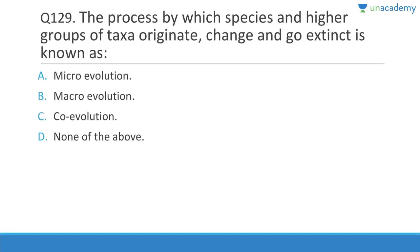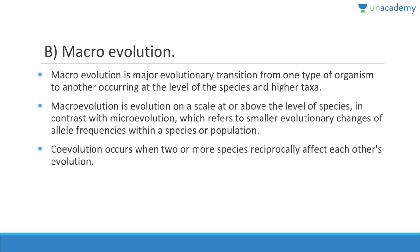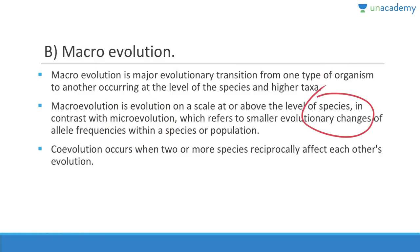Question 129: The process by which species and higher-level taxa originate, change, and go extinct is known as macro-evolution — major evolutionary transitions from one type of organism to another at the level of species and above. In contrast, micro-evolution refers to smaller changes in allele frequencies within a species. Co-evolution occurs when two or more species reciprocally affect each other, as in parasitism or mutualism.